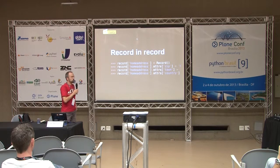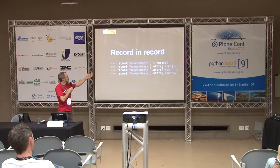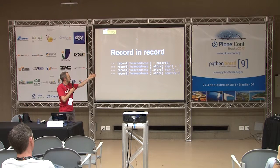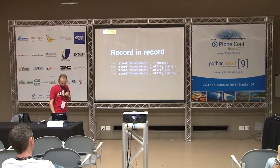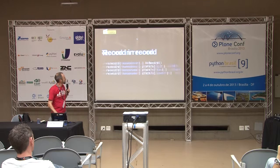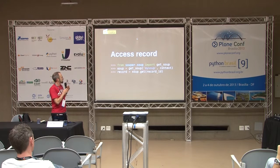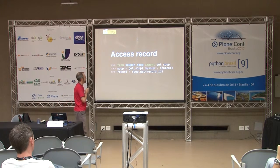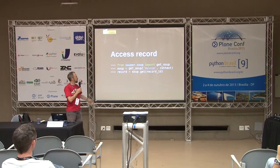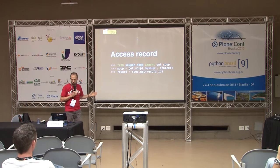You can have a record inside a record — no problem. So here, my record 'address' is going to have secondary attributes. That makes no problem. And you can access your record very easily as well: you get your Soup and get your record by its ID. Nothing difficult.